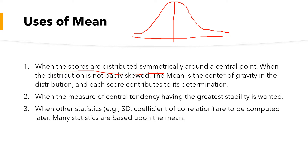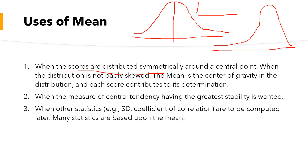In that case, mean is the better option as a representative of our data. But if our data is badly skewed — where the data shape looks like the bunch of data is on one side and most of the data is not at the midpoint — in that case we do not consider the mean as a representative. Mean is the center of gravity of the distribution.